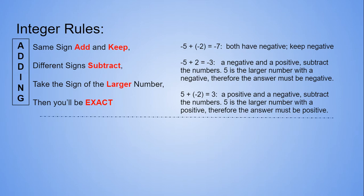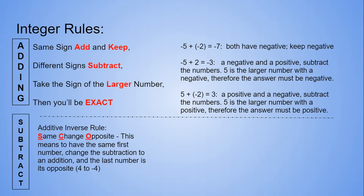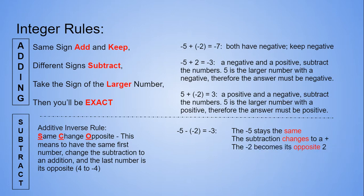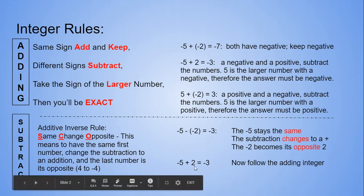For subtracting, we have the additive inverse rule saying change opposite. We simply keep the first number the same, change the subtraction to addition. The last number is the opposite, so negative 2 becomes positive 2. And then we follow our adding integer rules. We have different signs in this example, so we're going to subtract and take the sign of the larger number for our answer.